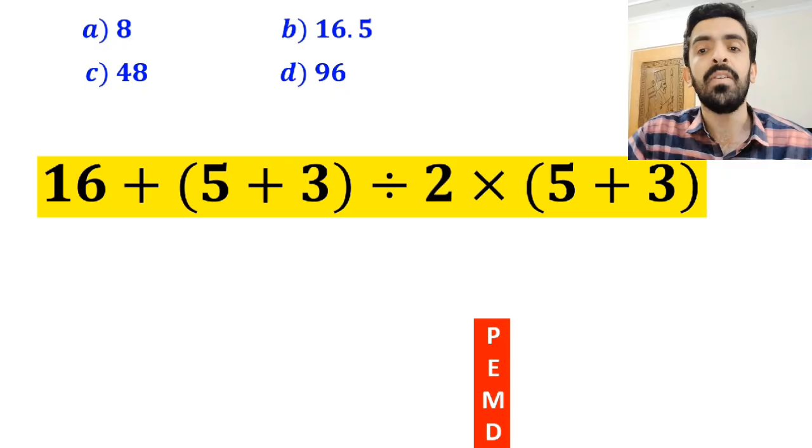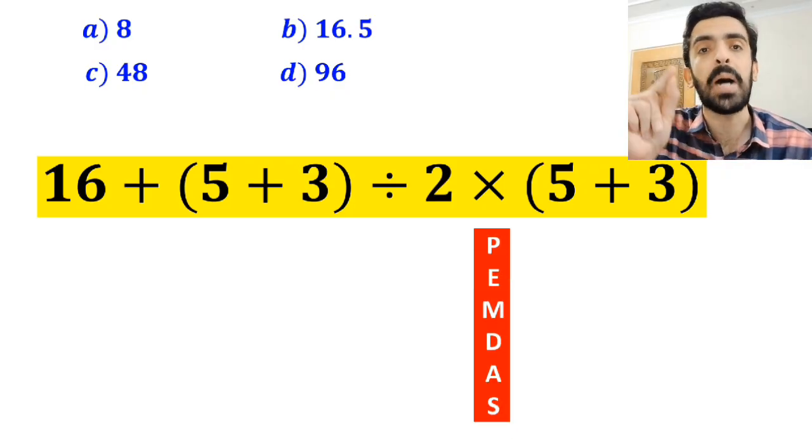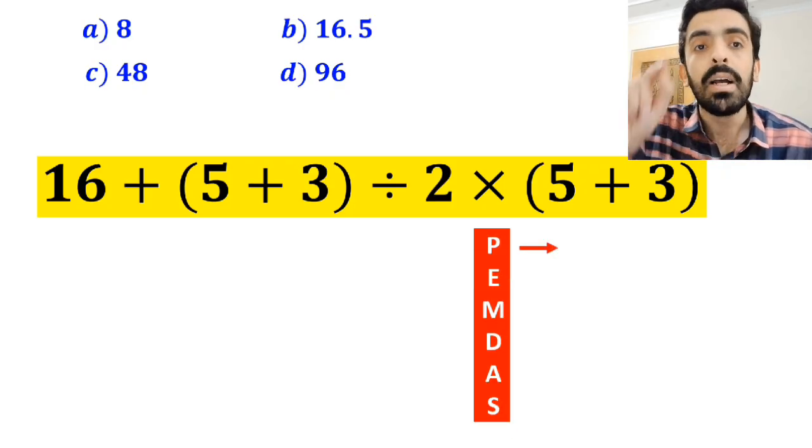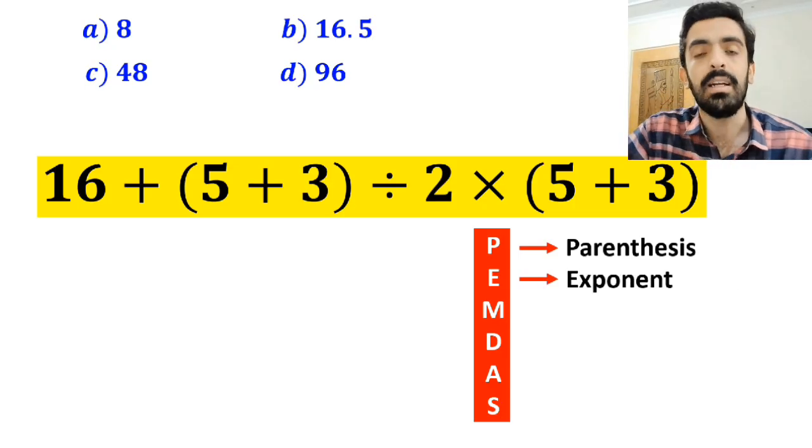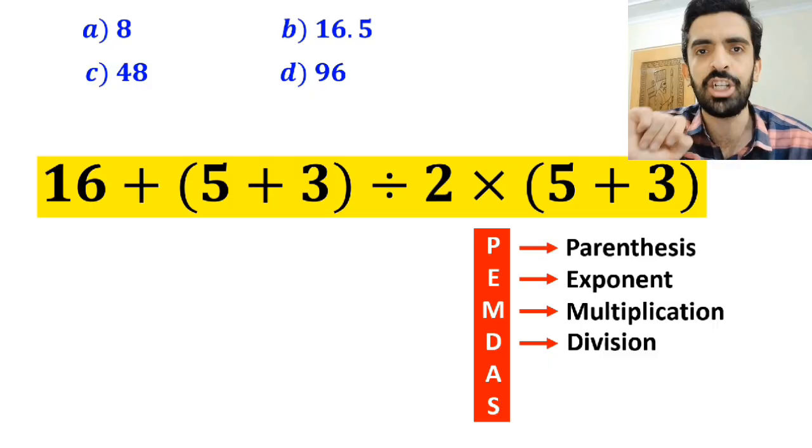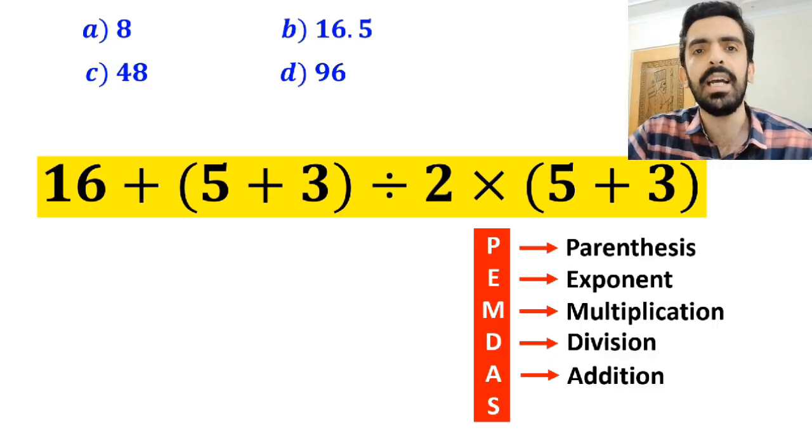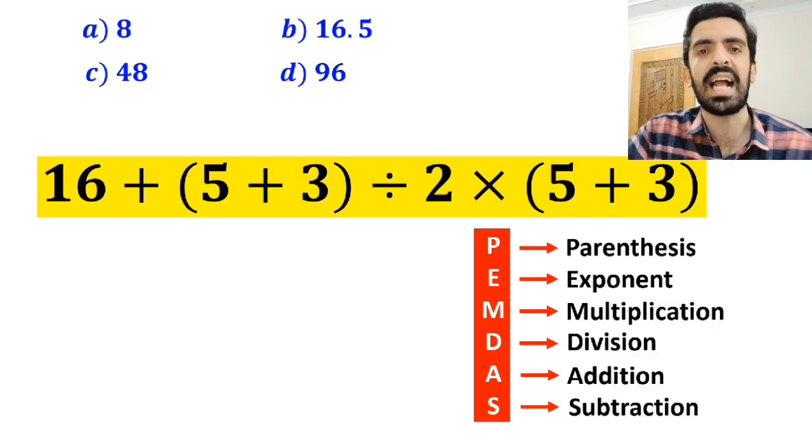To solve this question, we must follow the PEMDAS rule step-by-step. In this rule, P stands for parenthesis, E stands for exponent, M stands for multiplication, D stands for division, A stands for addition, and S stands for subtraction.